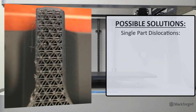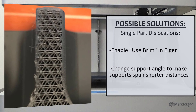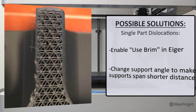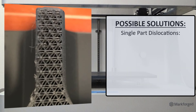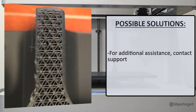If the dislocation is limited to one specific part, first we will want to know if the part is warping or lifting. If so, enable the use brim feature in Eiger, and change the support angles to make the support span shorter distances if possible. If the part has a shallow angle or fillet that prints over supports, change the angle to be closer to 45 degrees off the print bed, remove large radius fillets or change them to chamfers, and change the part orientation. For additional assistance with single parts that are dislocating, please contact support.